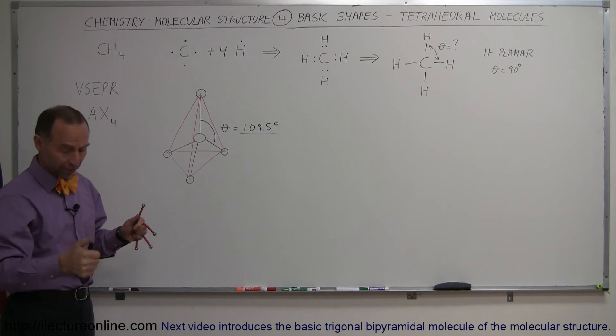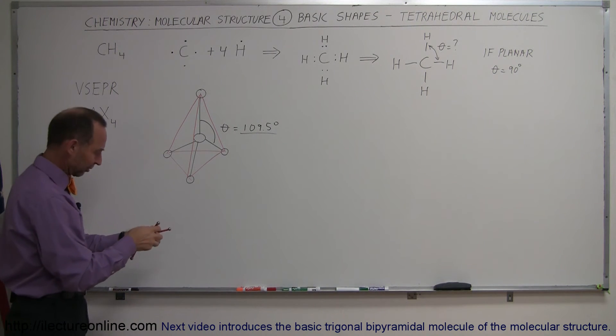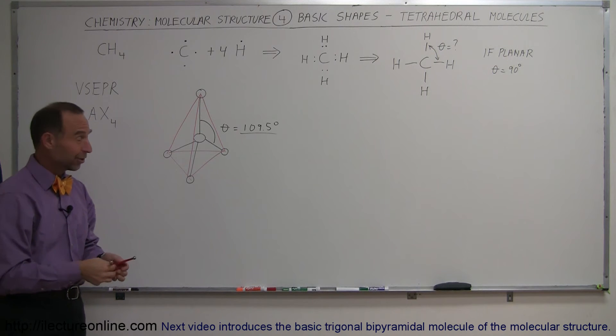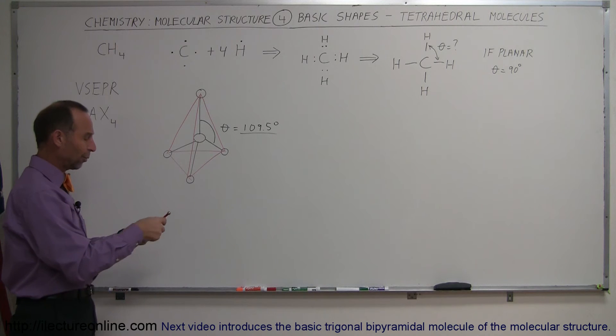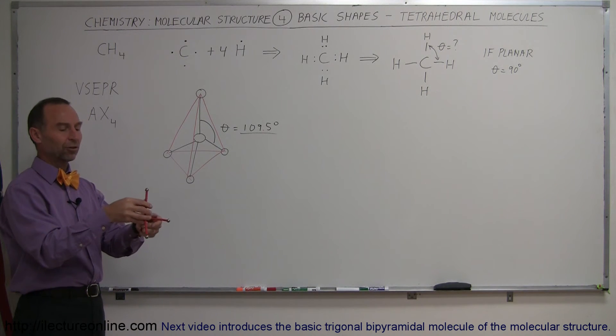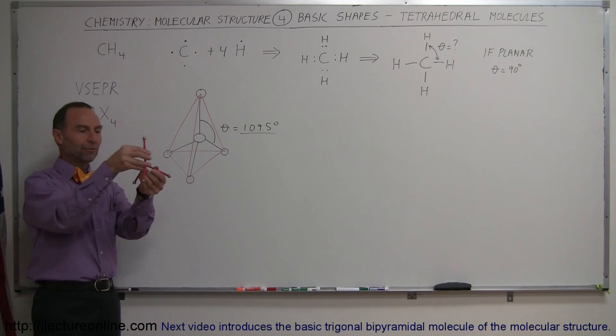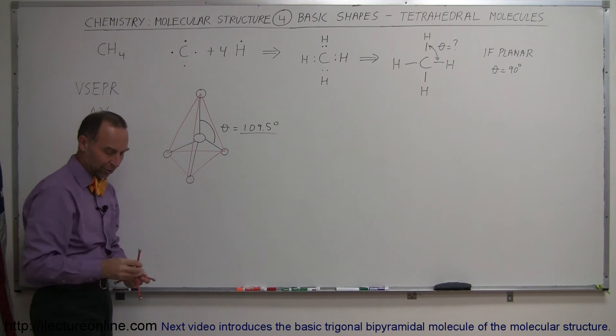Or electrons that are used in the bonds, I should say. They're not really bonded electrons, of course. They're electrons used in the bonding between carbon and the four hydrogens. So that's why it turns out that from electrical repulsive forces alone, it will form itself into this kind of molecule.